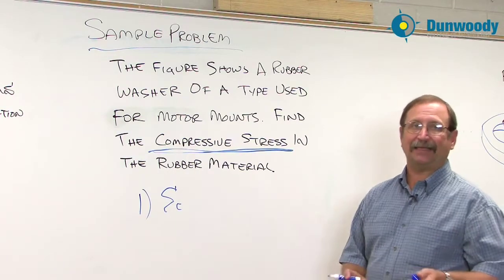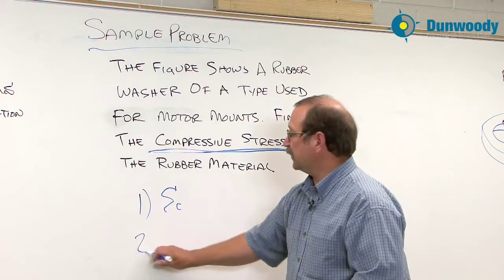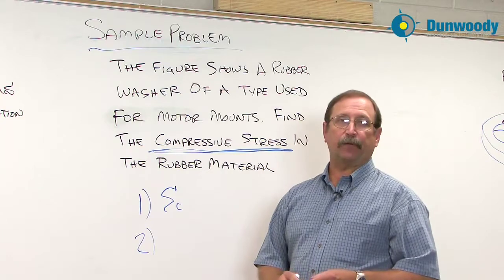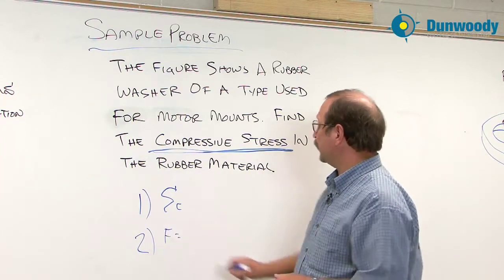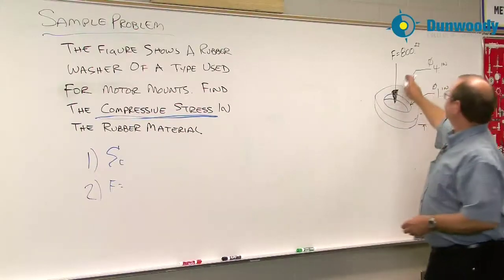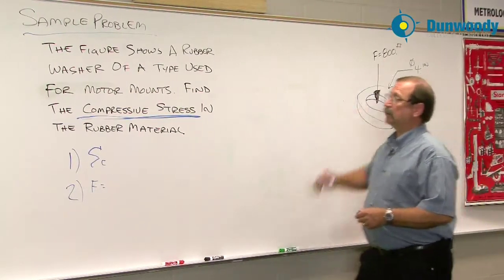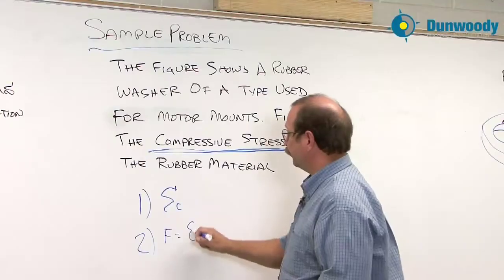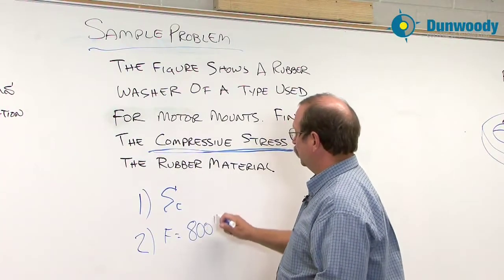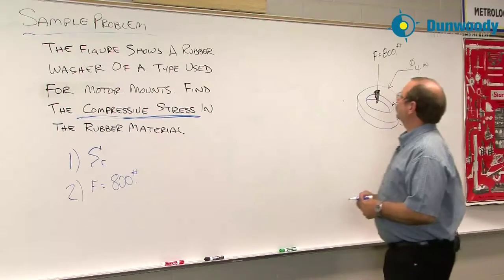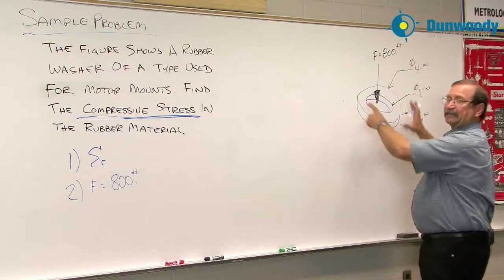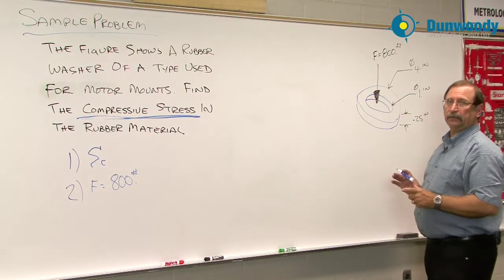So now that we understand what we're looking for, we want to try and take a look at anything that we know. So in step two, finding our known information, we're going to be able to take a look at the force here is given as 800 pounds. So we can come in here and fill in this 800 pounds. I also have an area to work with. And in this case, I have a hollow ring in my area.